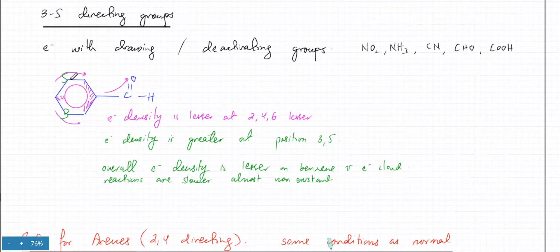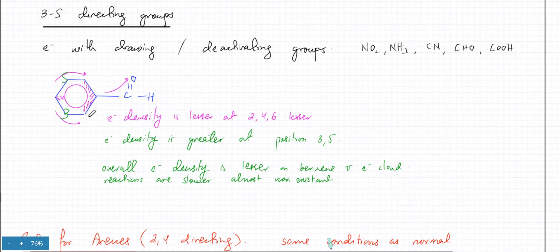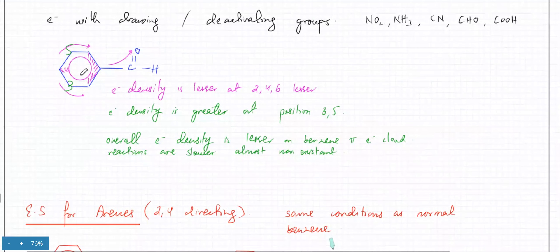So this is 1, 2, 4, and 6. Relatively, the electron density is going to be higher at position number 3 and 5. Any electrophile would therefore not be attracted to positions 2, 4, and 6, but instead would be attracted to positions 3 and 5. The overall electron density is lesser because it gets withdrawn by the group, which is why reactions would be slower — electrophiles are not going to be as attracted.